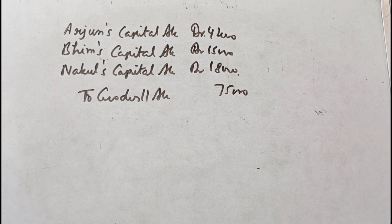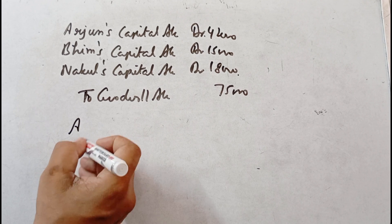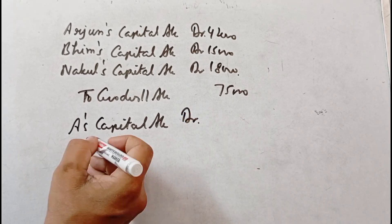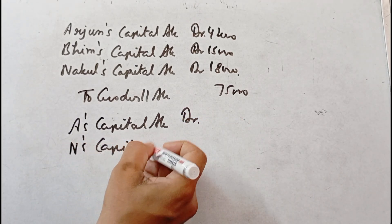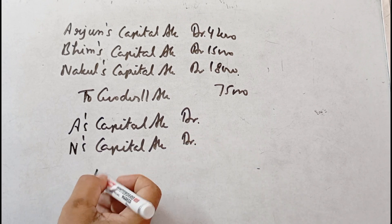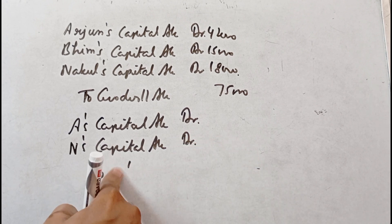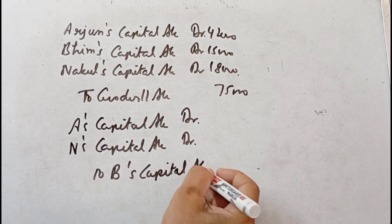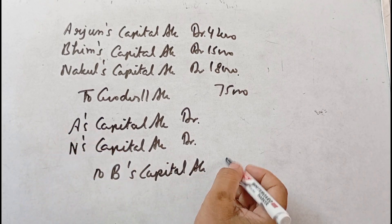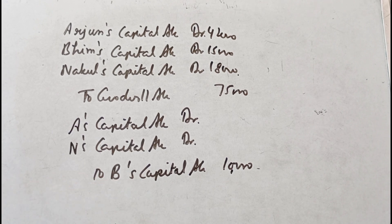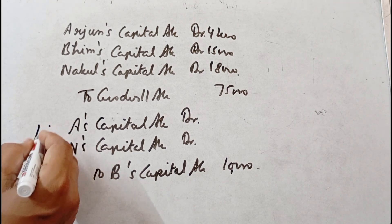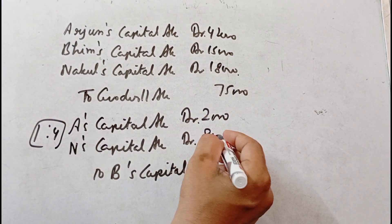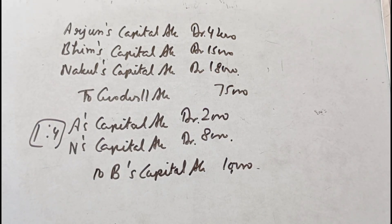Now for the valued goodwill entry: Arjun and Nakul are debited and Bhim is credited. Bhim's capital account is credited with Rs. 10,000. This 10,000 is split in the gaining ratio of 1 is to 4, so Arjun is debited Rs. 2,000 and Nakul is debited Rs. 8,000.